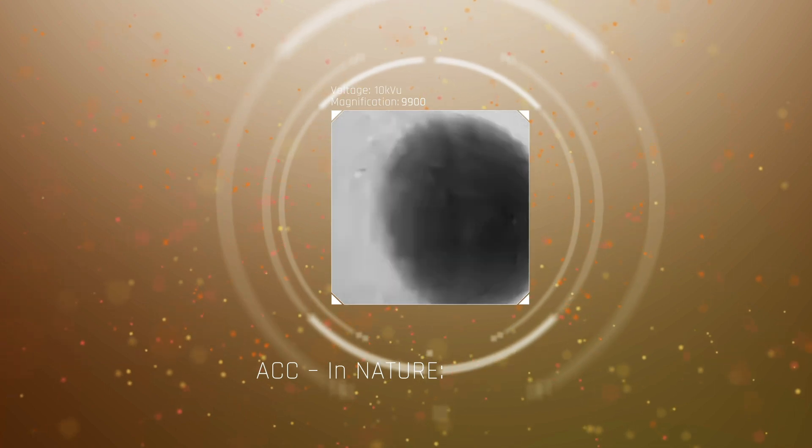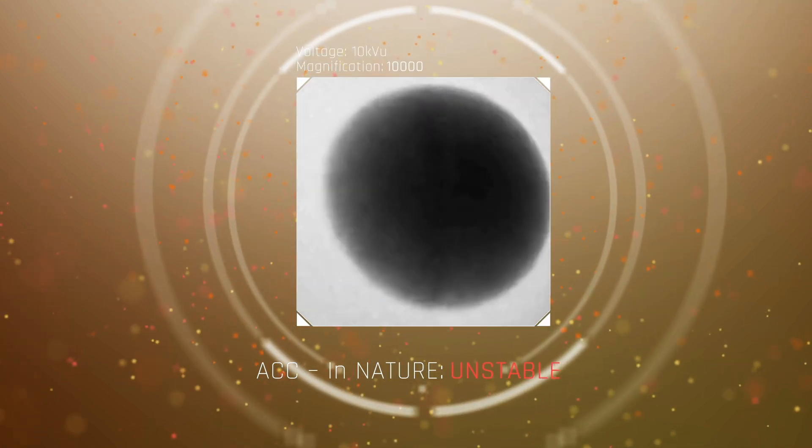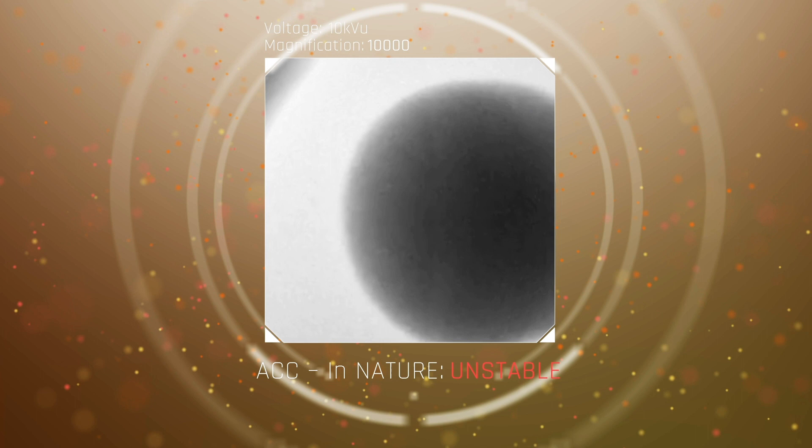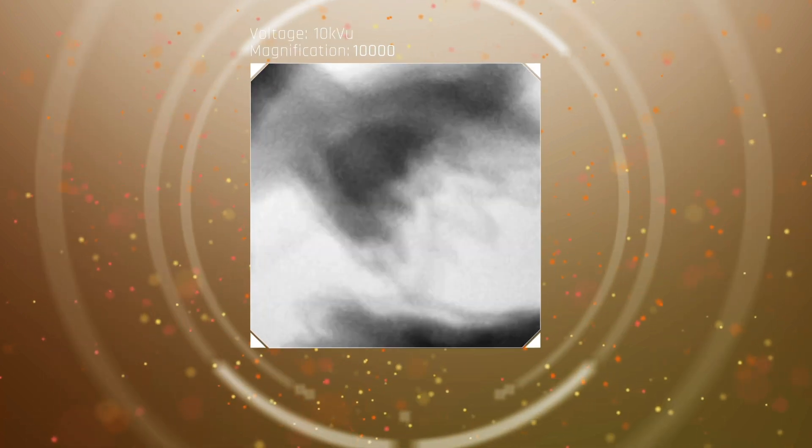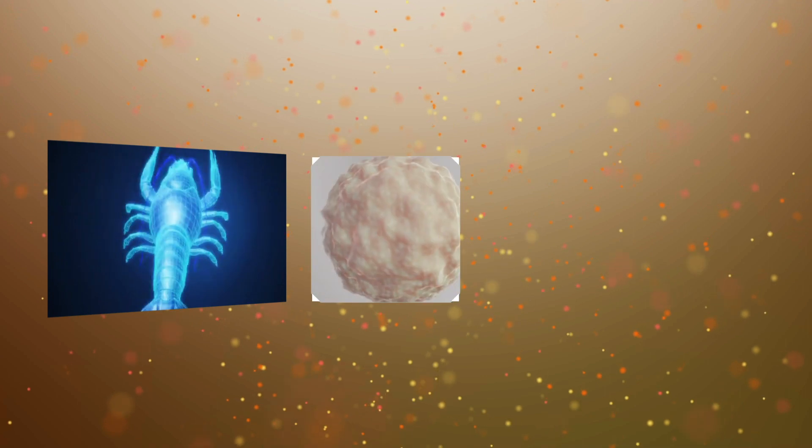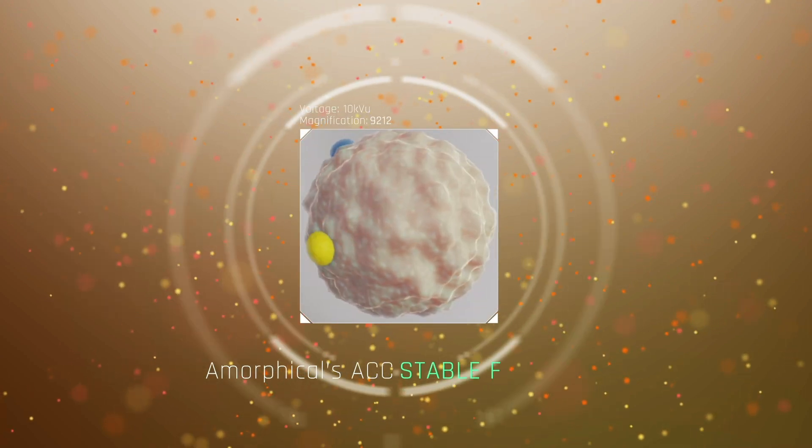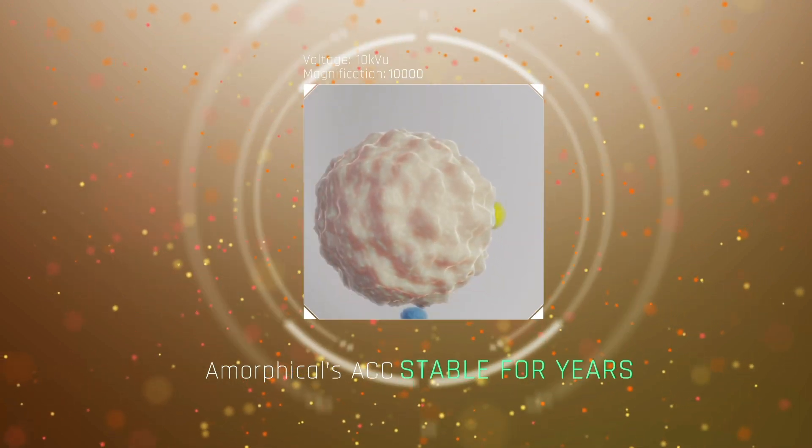In nature, amorphous calcium carbonate is a very unstable form and converts to three well-known crystalline phases within seconds to minutes, as reported in hundreds of researches. Based on biomimicry, Amorphical has developed a technology for producing ACC that can be stabilized for years.